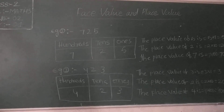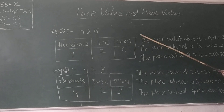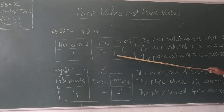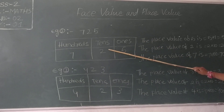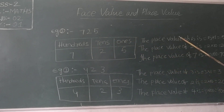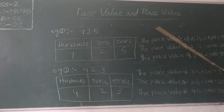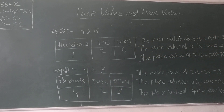Let us see the example 725. Find the place values. The 5 is in the 1s place, the 2 is in the 10s place, and the 7 is in the 100s place. So the place value of 5 is 5 × 1 = 5. The place value of 2 is in the 10s place, so 2 × 10 = 20.